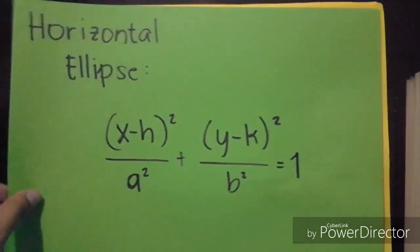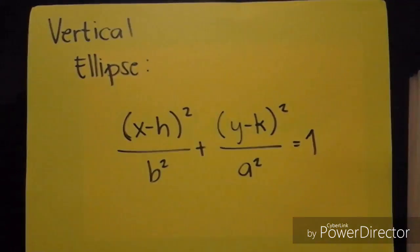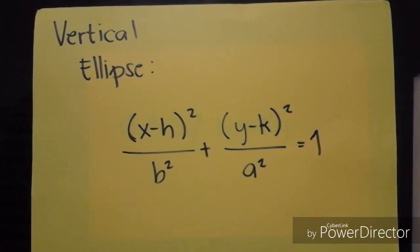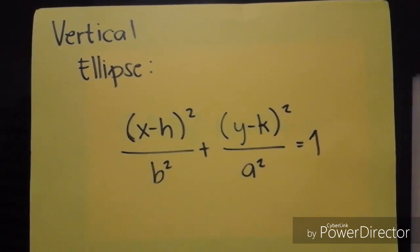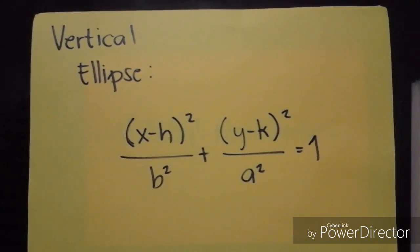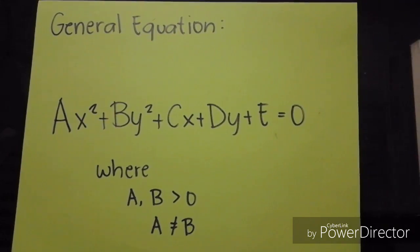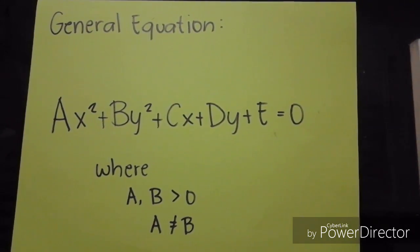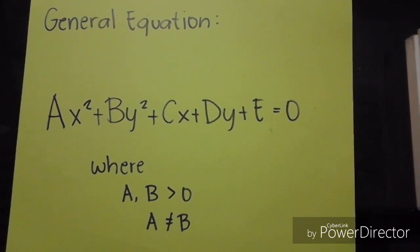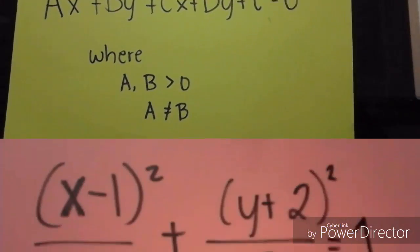The standard equation of a vertical ellipse with center at (h, k) is the quantity of x minus h squared over b squared, plus the quantity of y minus k squared over a squared, is equal to 1. And the general equation of an ellipse is ax squared plus by squared plus cx plus dy plus e is equal to 0, where a and b are greater than 0 and a is not equal to b.